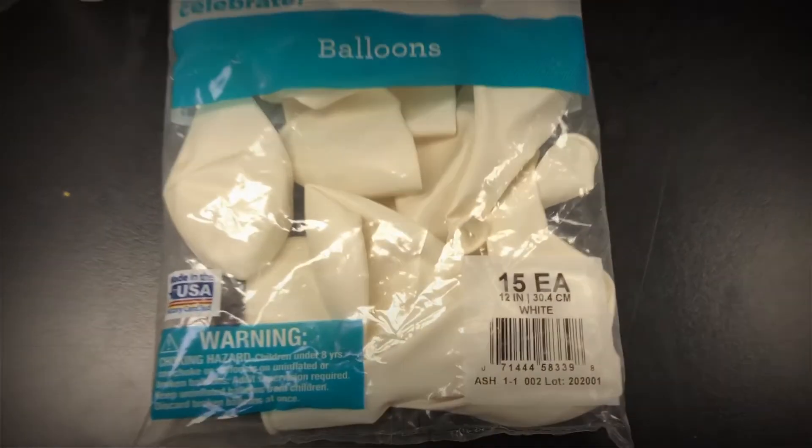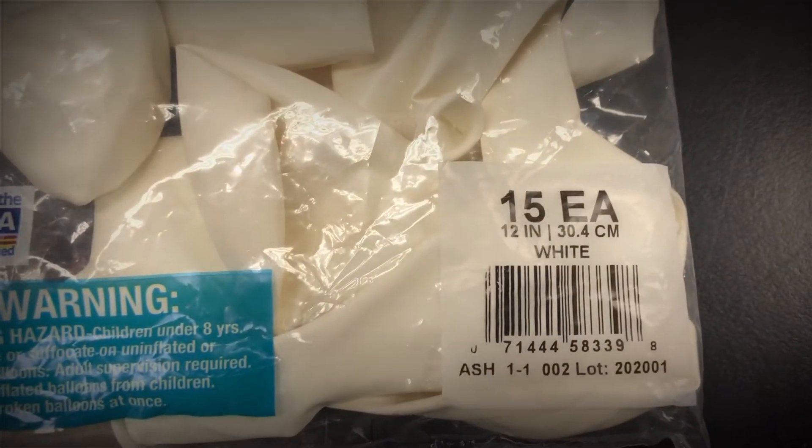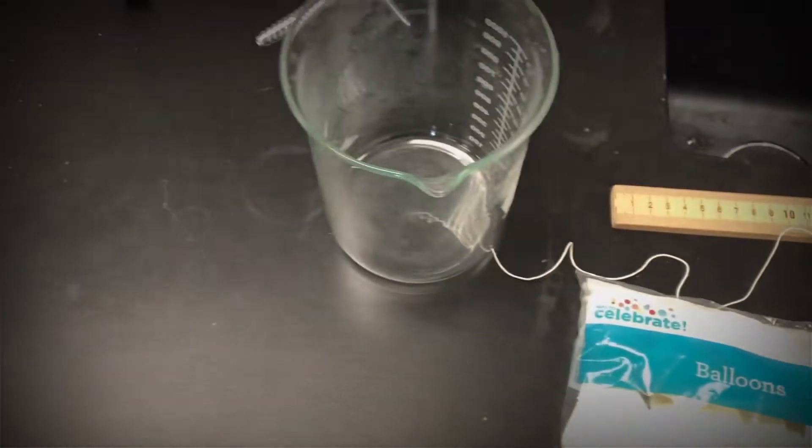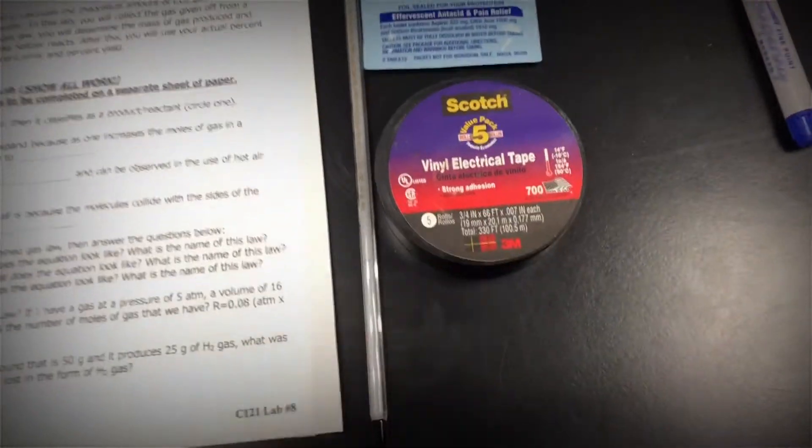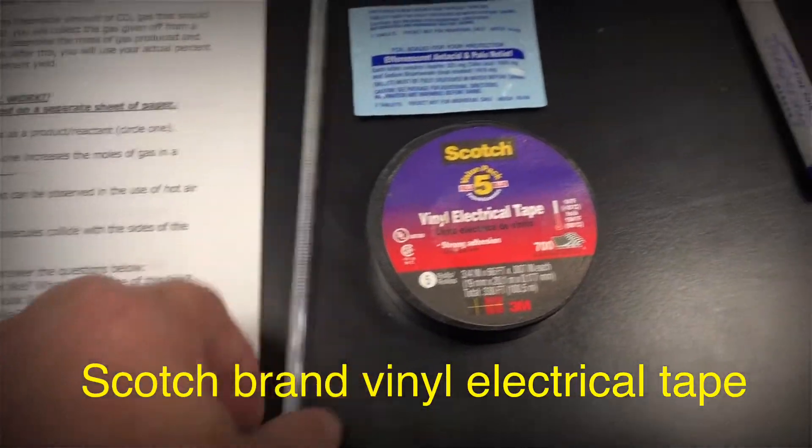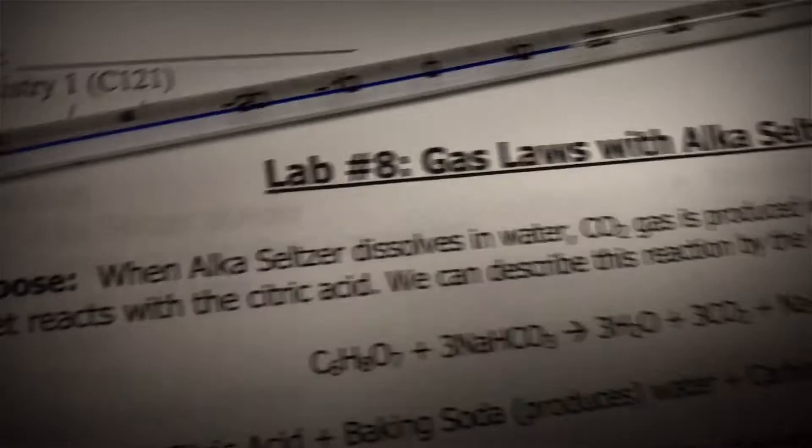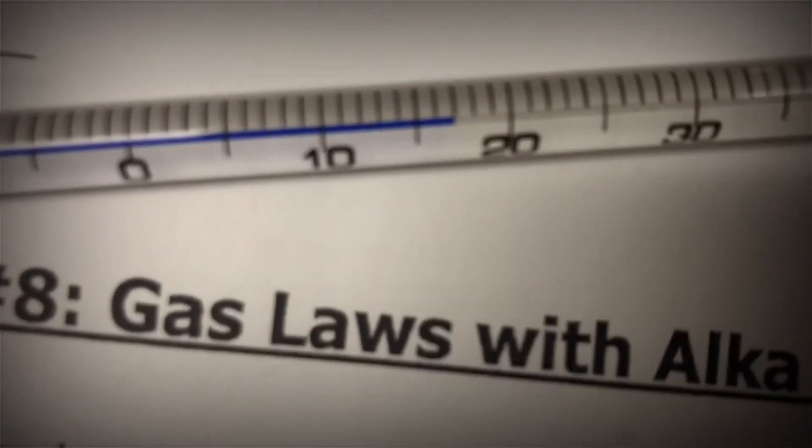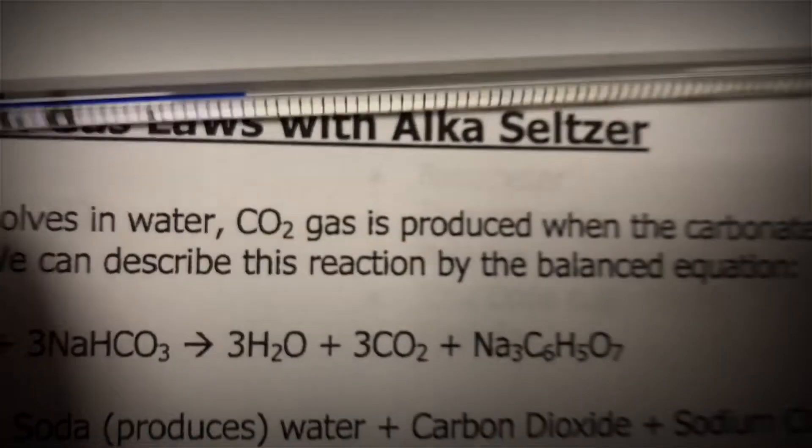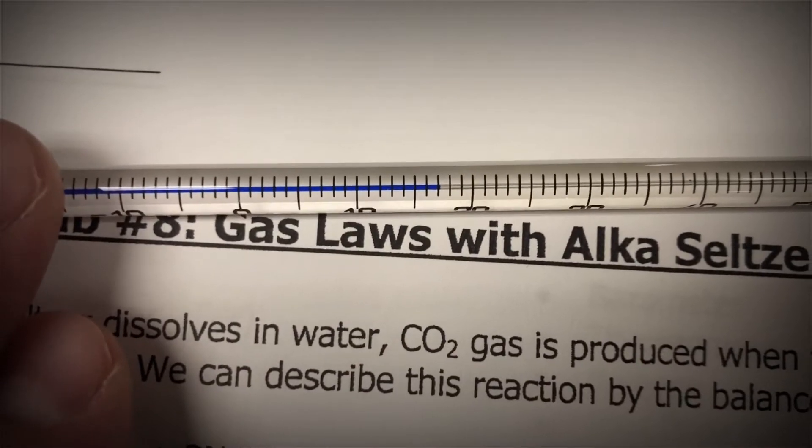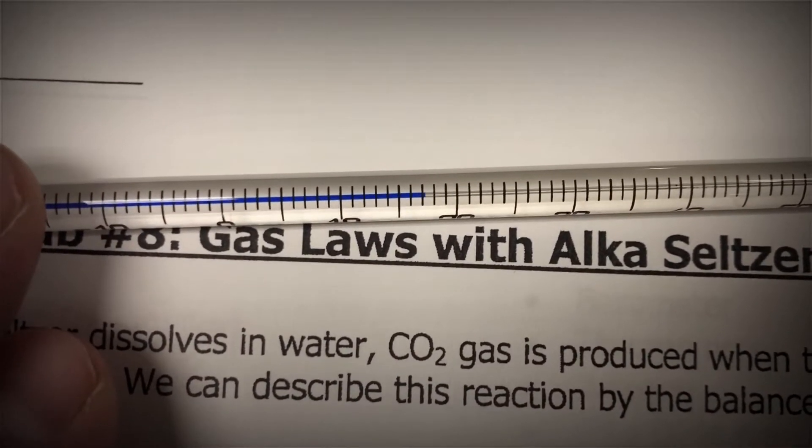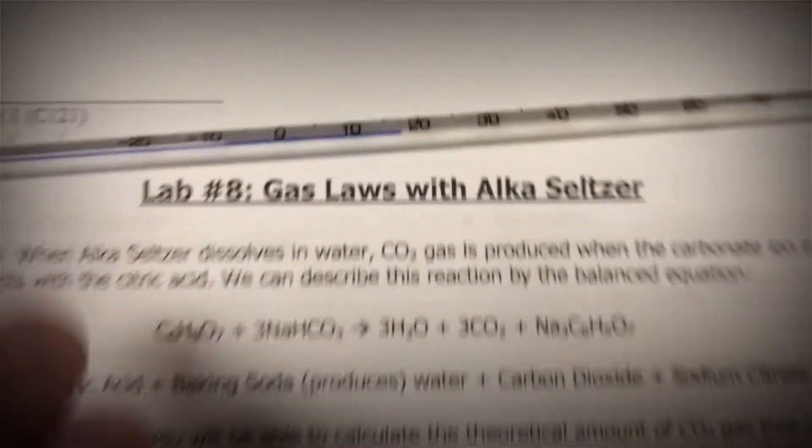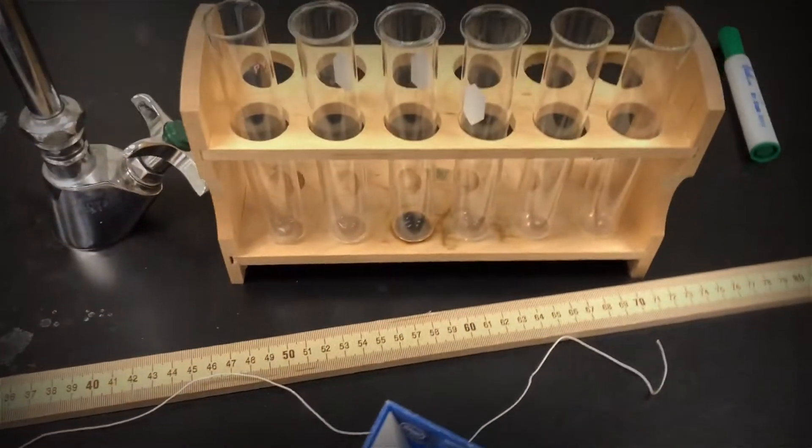Also got balloons. Now it says to use 9 inch balloons, but we are going to use 12 inch balloons. We have string, a ruler, a large beaker, scotch tape. We have used this thermometer and measured the room temperature. We're going to change that to 17.1 degrees Celsius. We've got our test tubes.